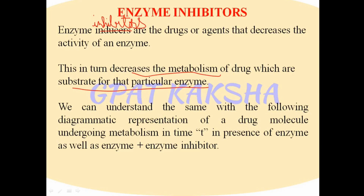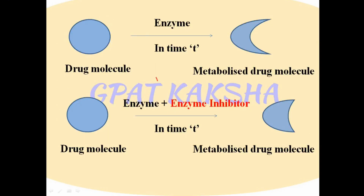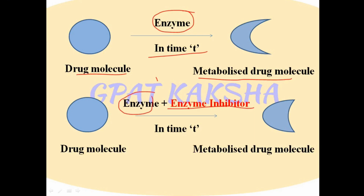We can understand this with a diagrammatic representation comparing metabolism in time t in the presence of enzyme alone versus enzyme plus enzyme inhibitor. In the normal case, the drug molecule is metabolized in time t in the presence of the enzyme. When an enzyme inhibitor is also present, it decreases the activity of the enzyme, so the drug molecule that was metabolized in time t is now getting metabolized at a slower rate — a lesser portion of the drug is metabolized.